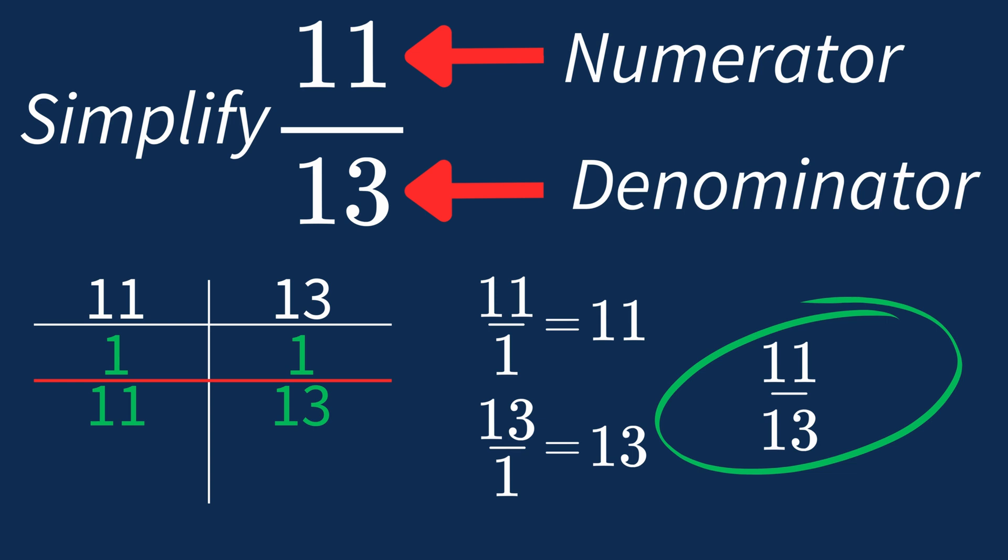So 11 over 13 is an irreducible fraction, meaning it's as simple as it can get. In future, if the greatest common factor is 1, you know that fraction is already in its simplest form.